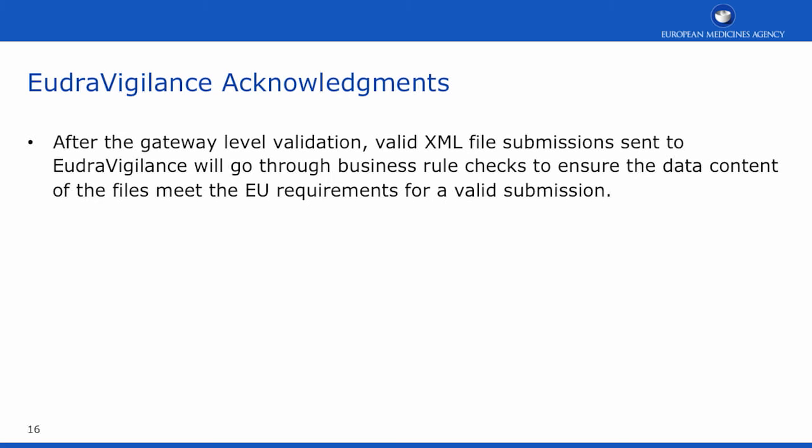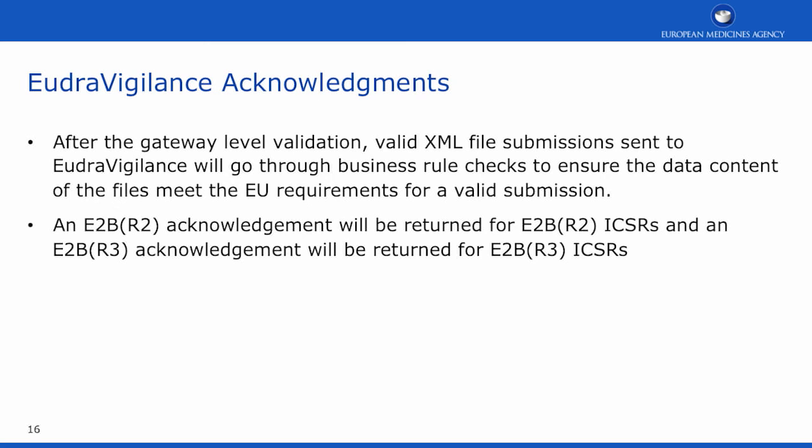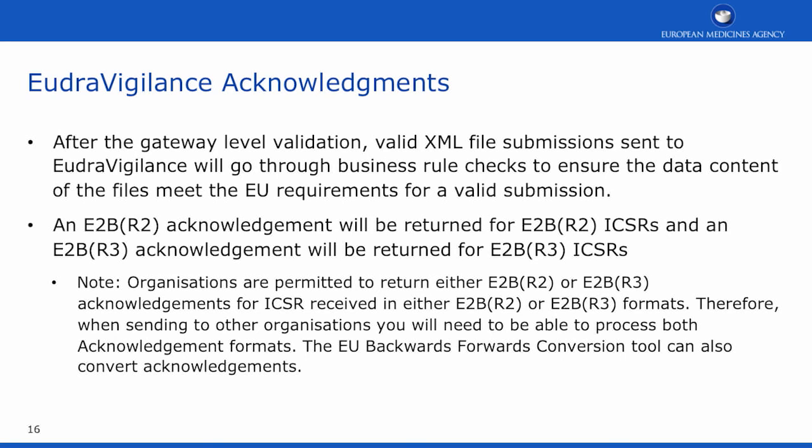After the gateway-level validation, valid XML file submissions sent to EudraVigilance will go through business rule checks to ensure that the data content meets EU requirements for a valid submission. An E2B R2 acknowledgement will be returned for E2B R2 ICSRs, and an E2B R3 acknowledgement will be returned for E2B R3 ICSRs. However, it is permitted to return either E2B R2 or E2B R3 acknowledgements for ICSRs received in either E2B format. Therefore, when sending to organisations other than EudraVigilance, you will need to be able to process both acknowledgement formats. The EU backwards-forwards conversion tool can assist with this, as it can also convert acknowledgement files between the two formats.